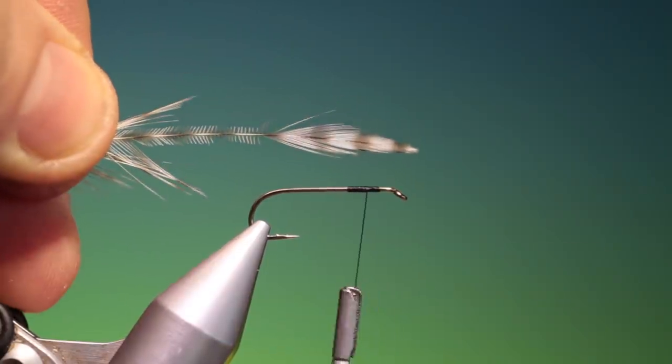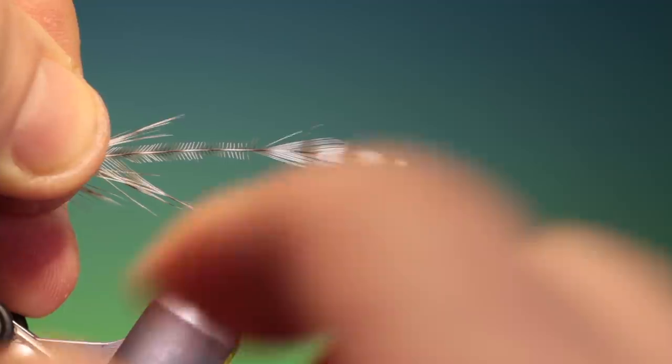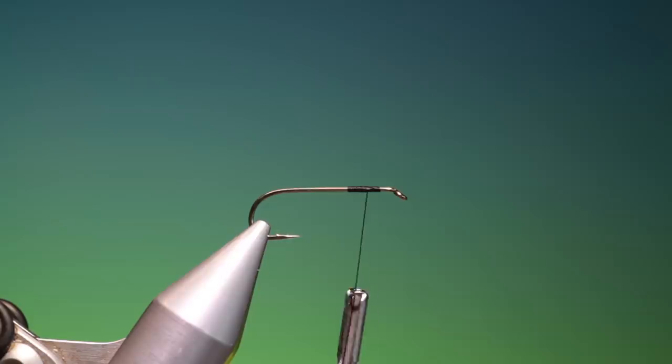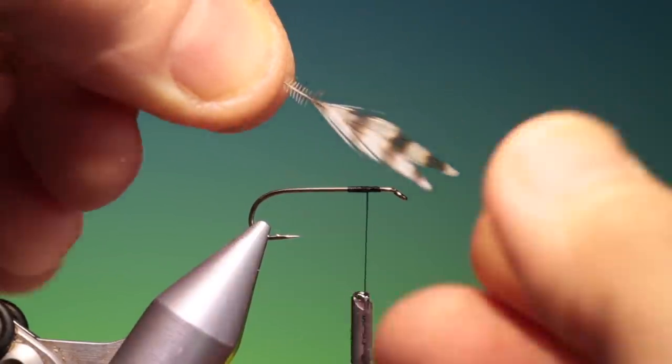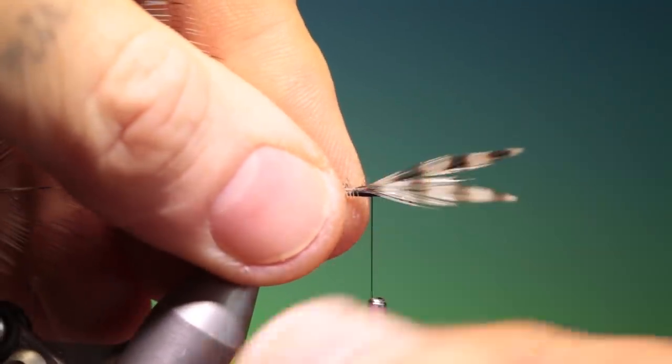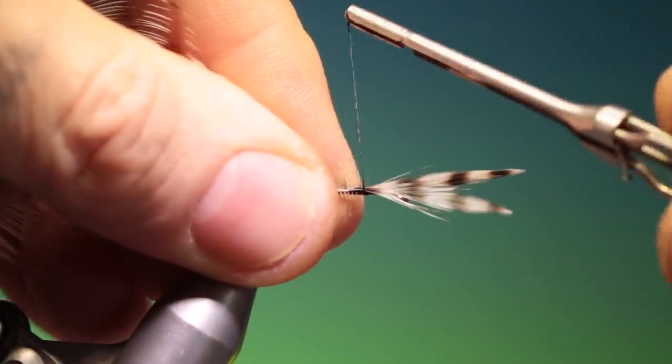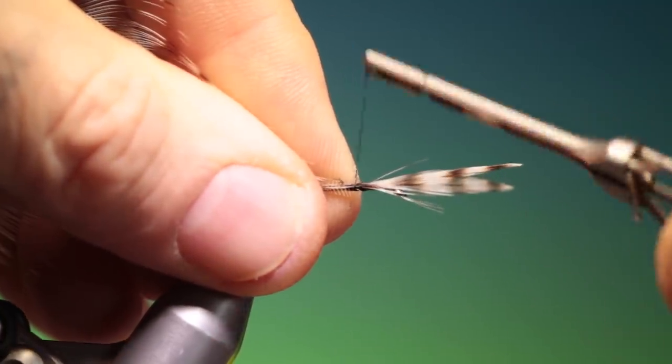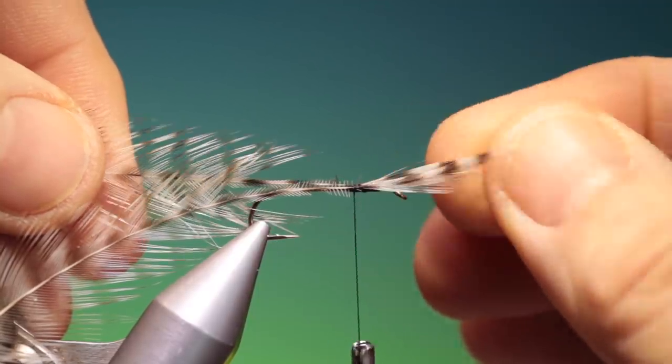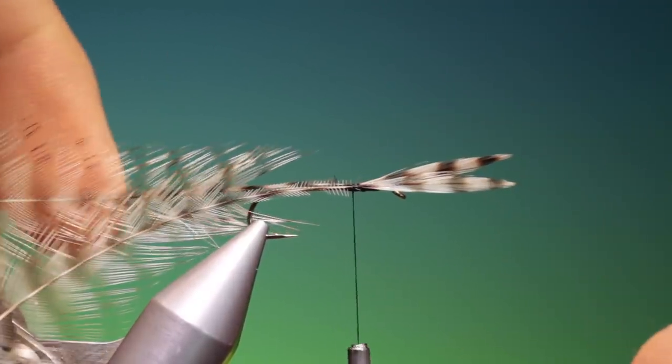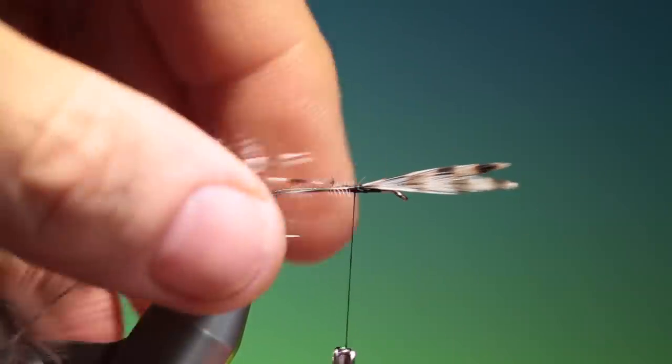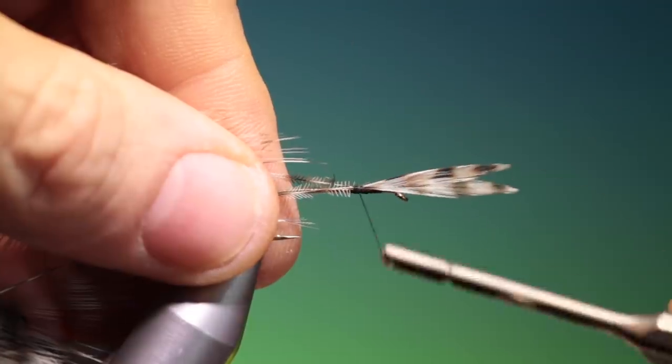I've prepared two grizzle tips, grizzle hackle tips for the first wings, about the same length as the hook shank. Place these together like so and we just tack them in a couple of turns and then we can adjust them. It needs to be a bit shorter that one. Now we can tighten in.